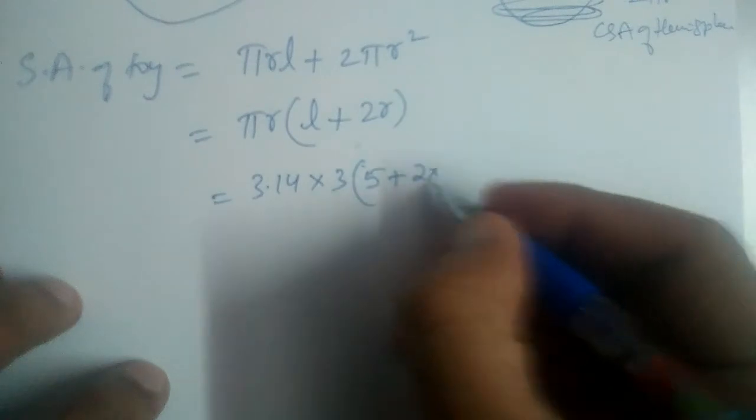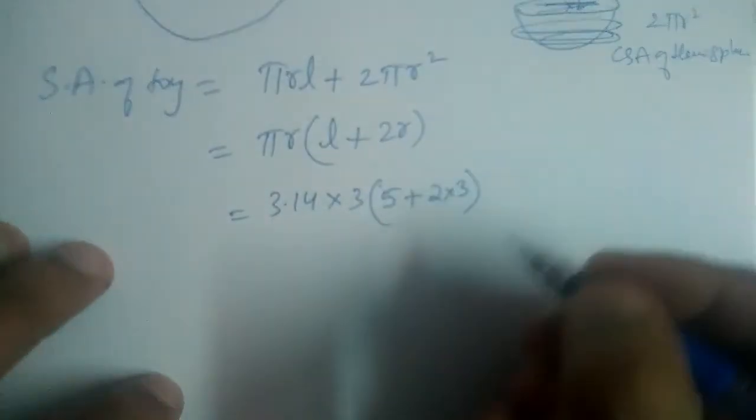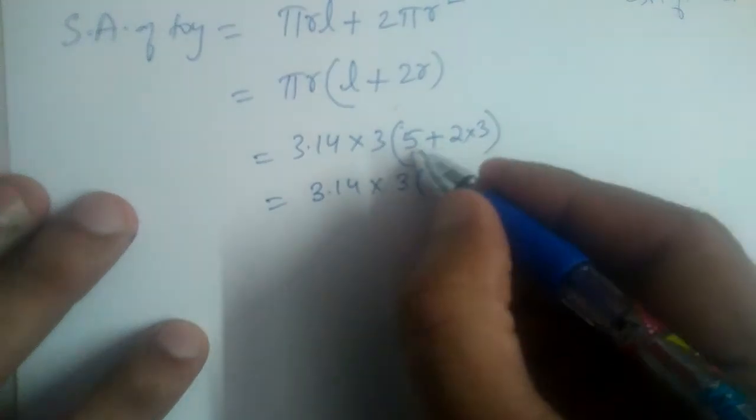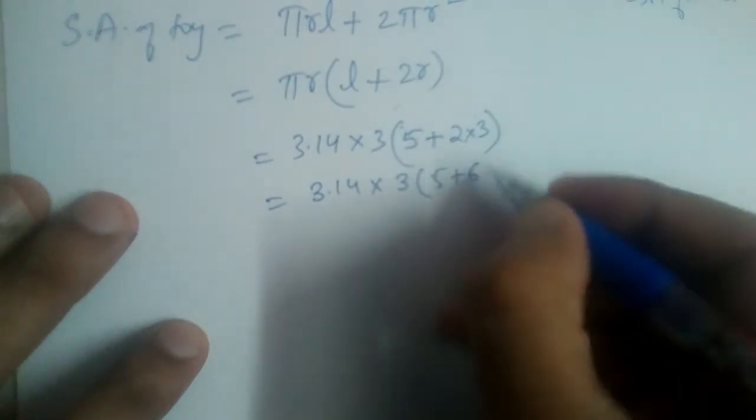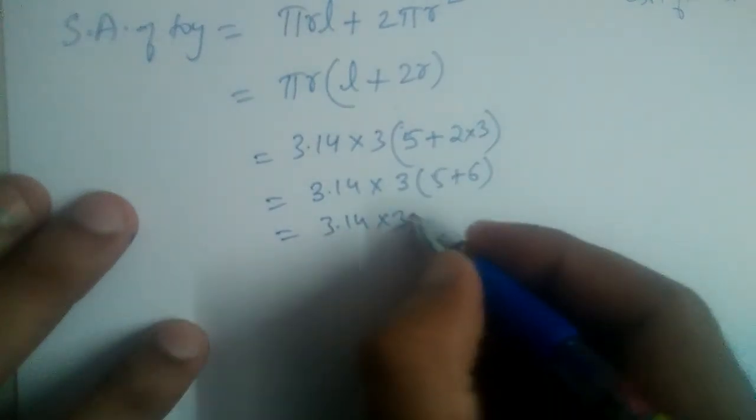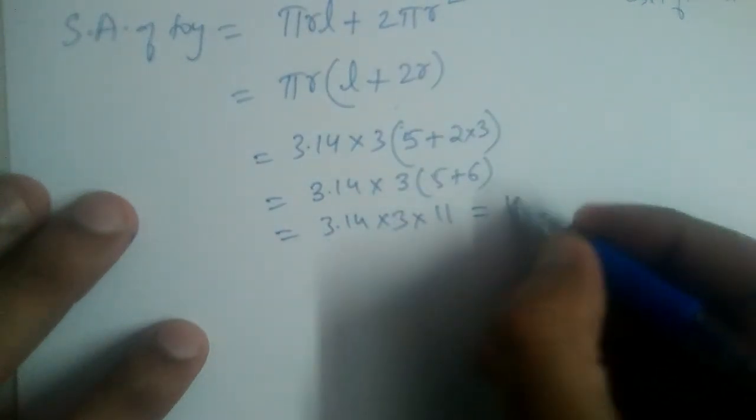2 into r, 2 into r is equal to 3. Okay, now 3.14 into 3 into 5 plus 6. 3.14 into 3 into 11, so this will give us...